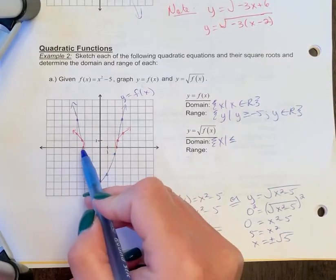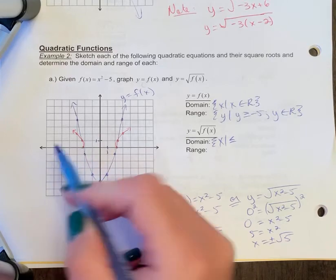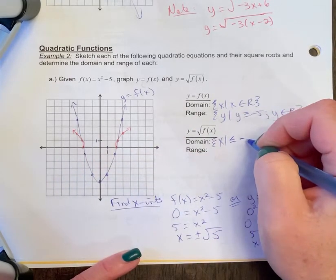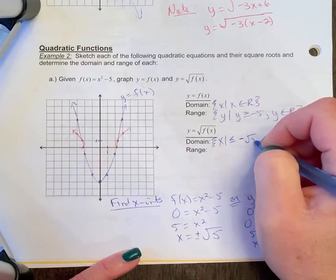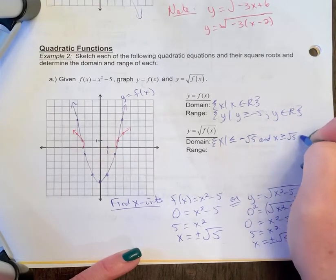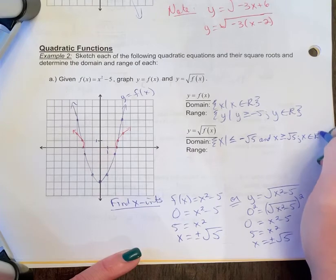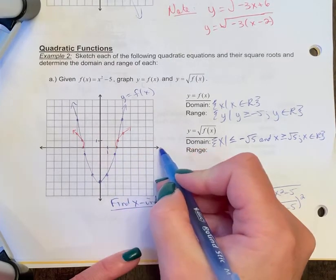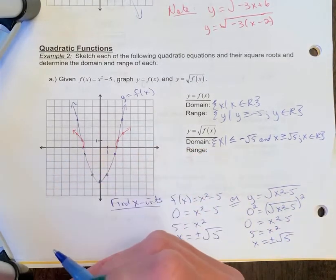And I would say, well, x is less than negative square root 5, and x is greater than positive root 5, which is approximately 2.2. So it's everything greater than root 5, everything less than negative root 5.